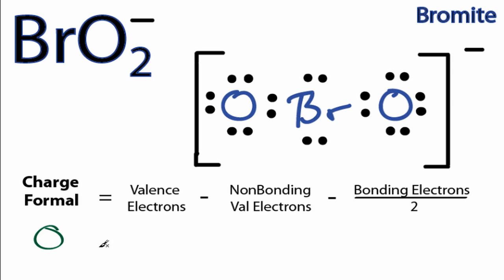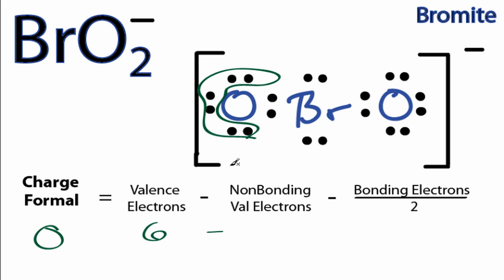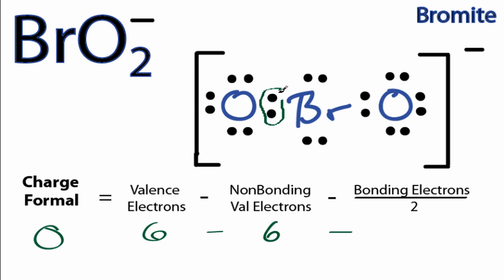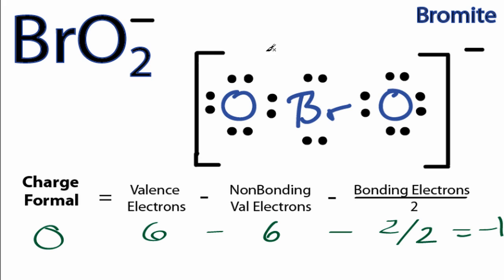For oxygen — and both oxygens are the same — on the periodic table, oxygen has 6 valence electrons, minus non-bonding electrons (the ones not involved in chemical bonds), so we have 6 of those, minus bonding electrons — these 2 right here — but we divide that by 2. 6 minus 6 minus 1 equals negative 1. Therefore, both of these oxygens have formal charges of minus 1.